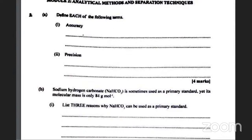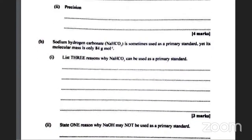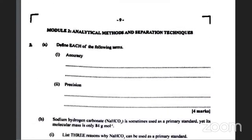Accuracy is how close the measurement is to the true or accepted value. Precision is how close the measurements are to each other. That is correct.